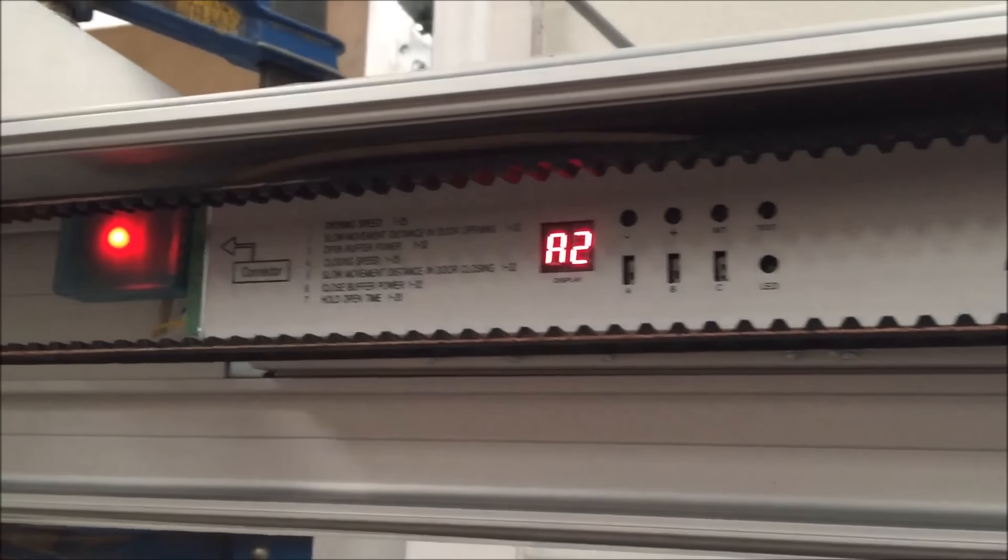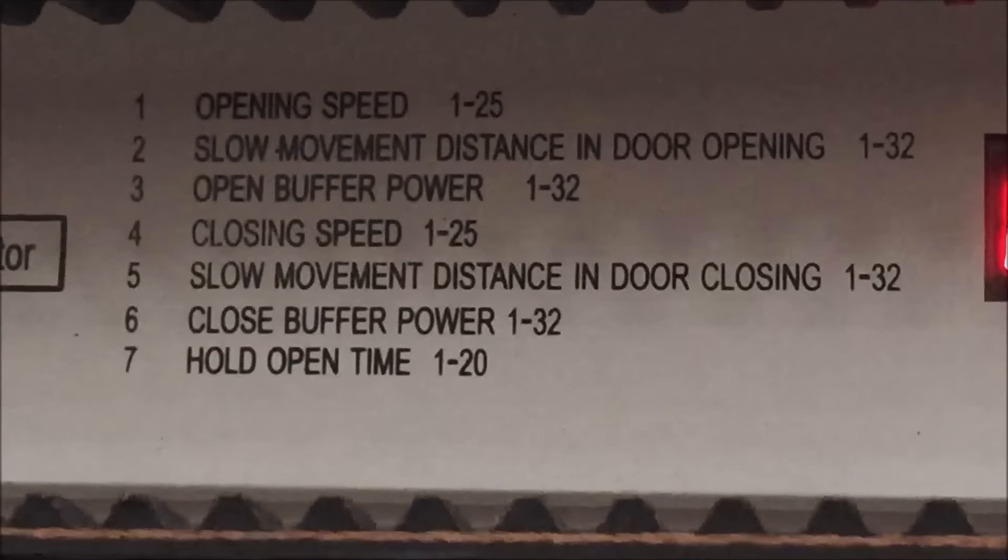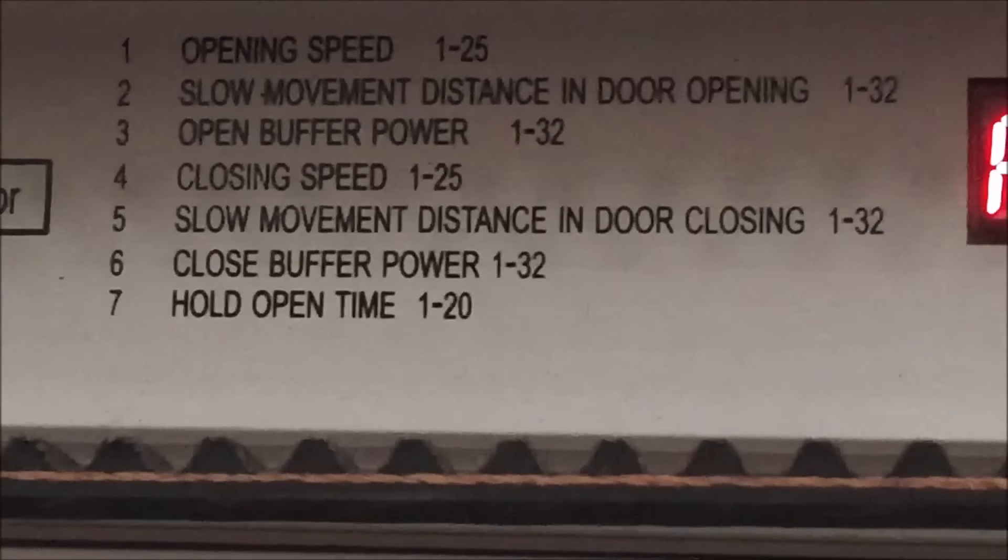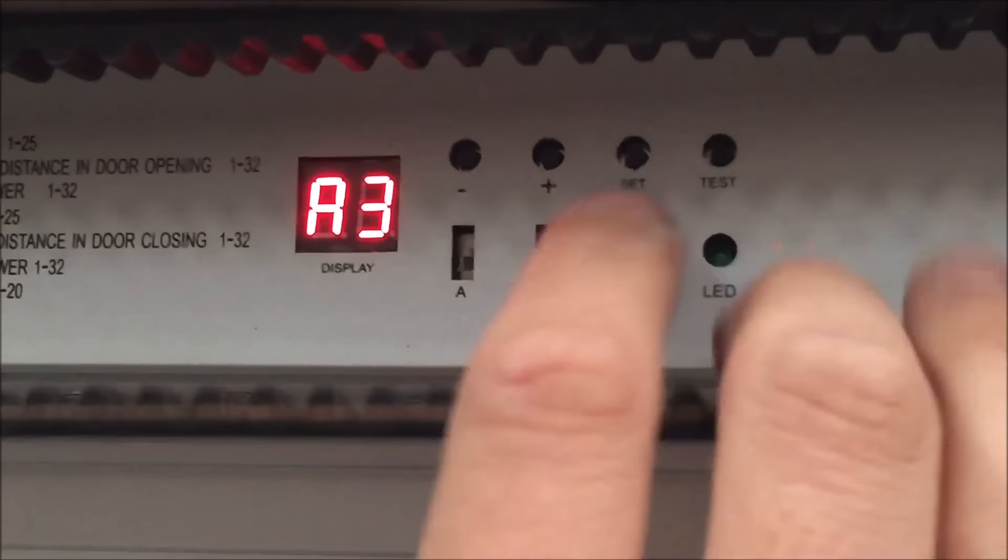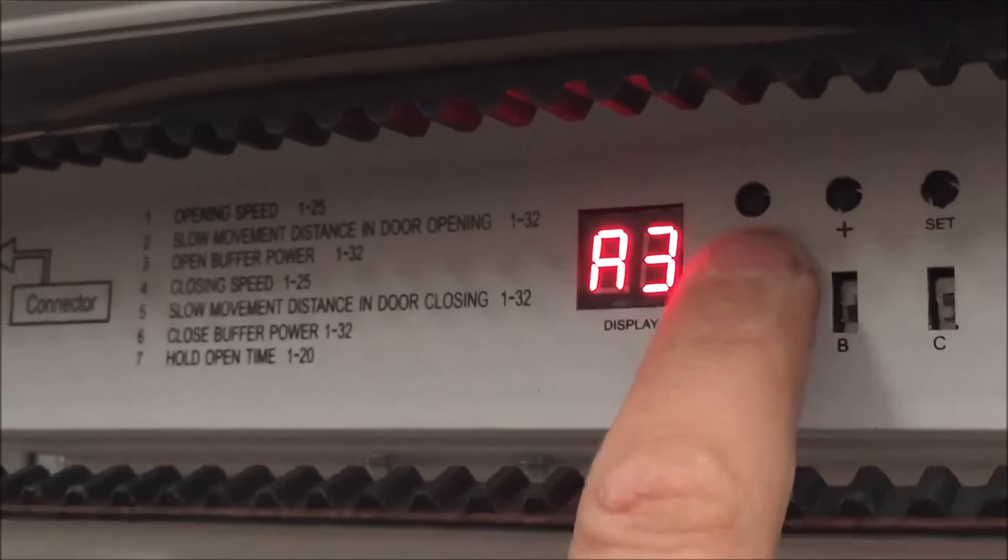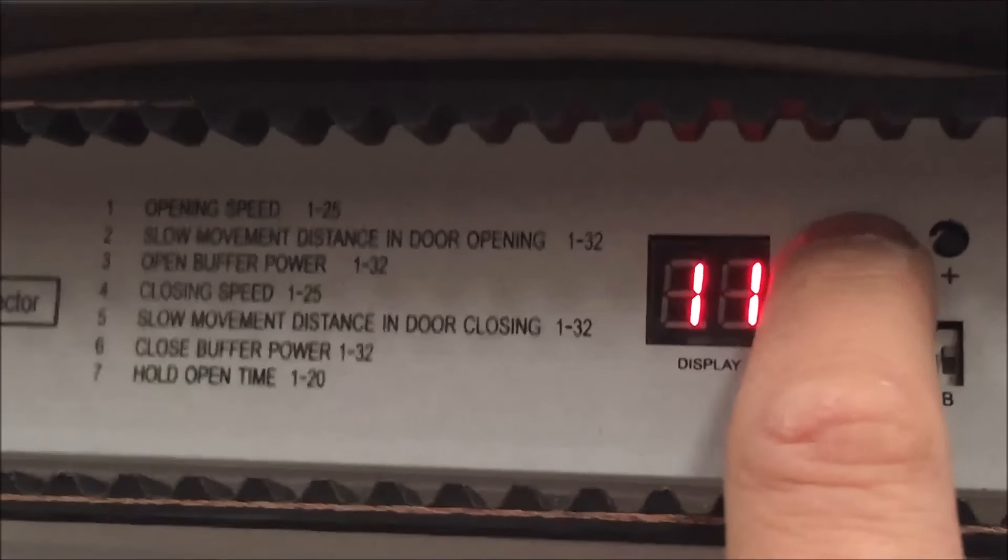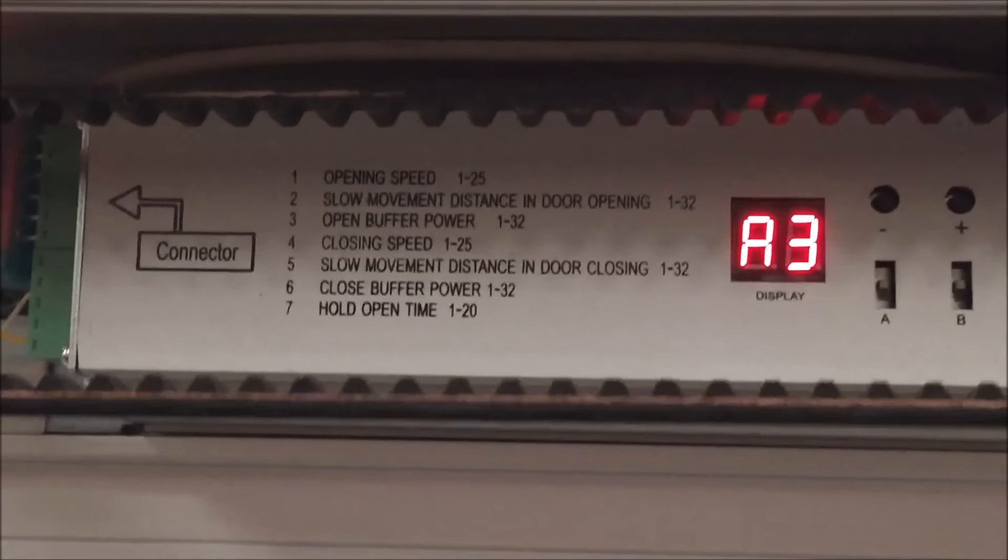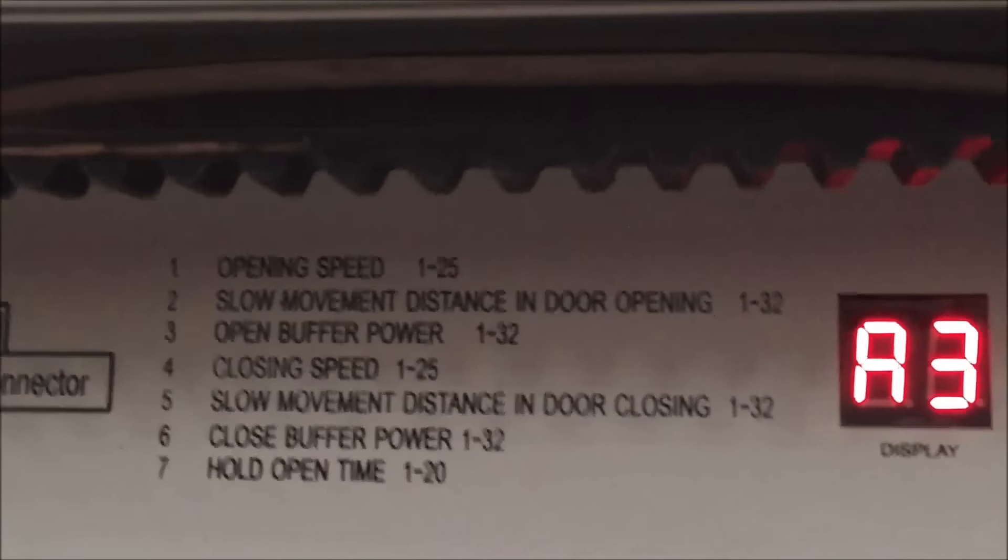El siguiente menú es la sensibilidad de la puerta en la apertura para el anti-aplastamiento. Para ello pulsamos otra vez el botón set hasta que nos vamos al menú 3 y seleccionamos nuestra fuerza. En principio siempre tendréis que ponerlo en el valor más bajo posible sin que se nos pare la puerta cuando está abriendo sin ninguna presión. Iremos seleccionando también desde el 1 hasta el 32 para seleccionar la fuerza que nos venga mejor.